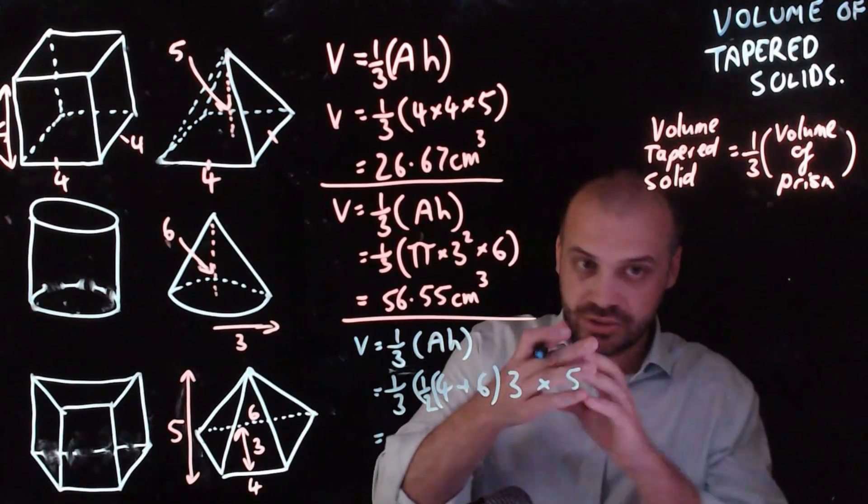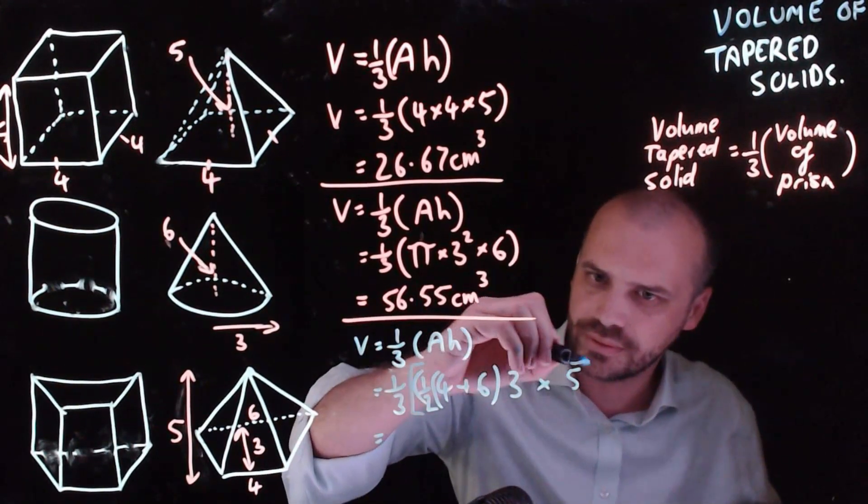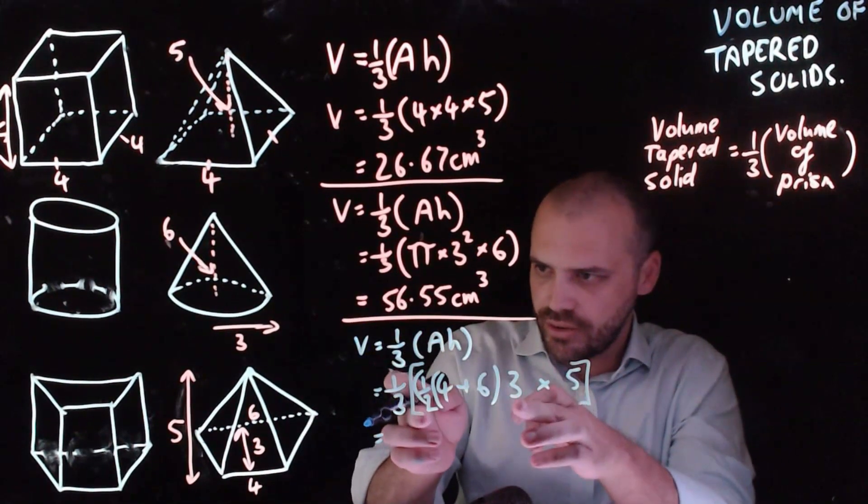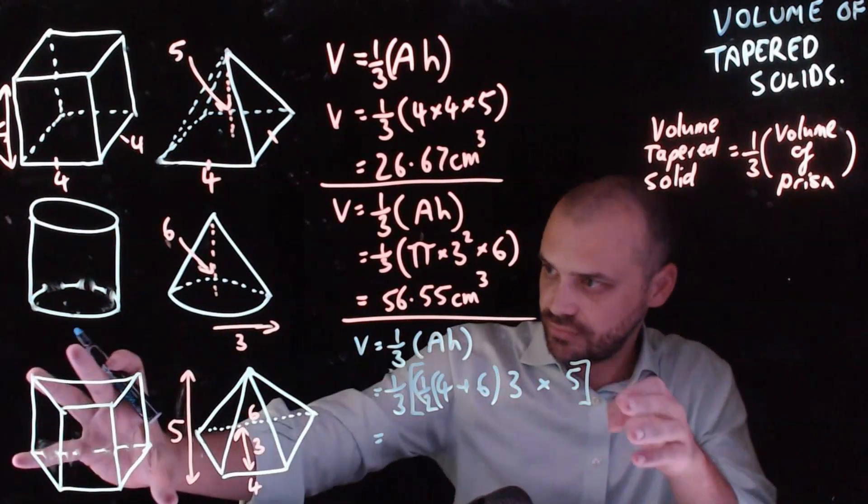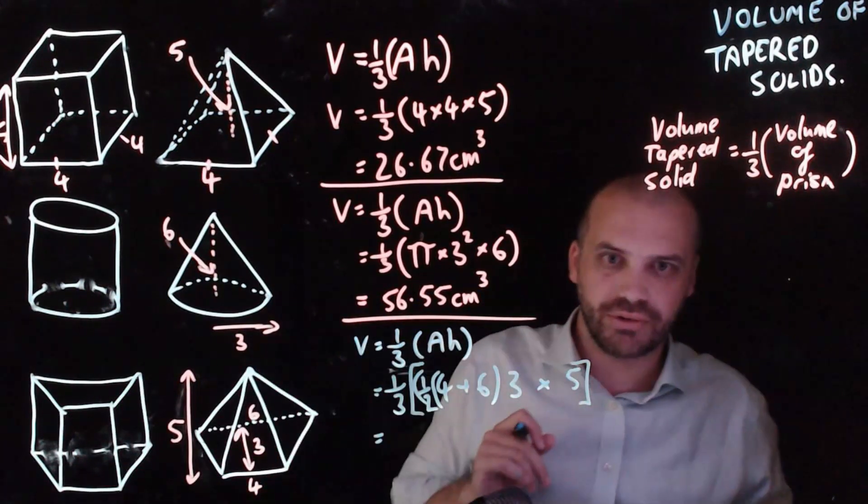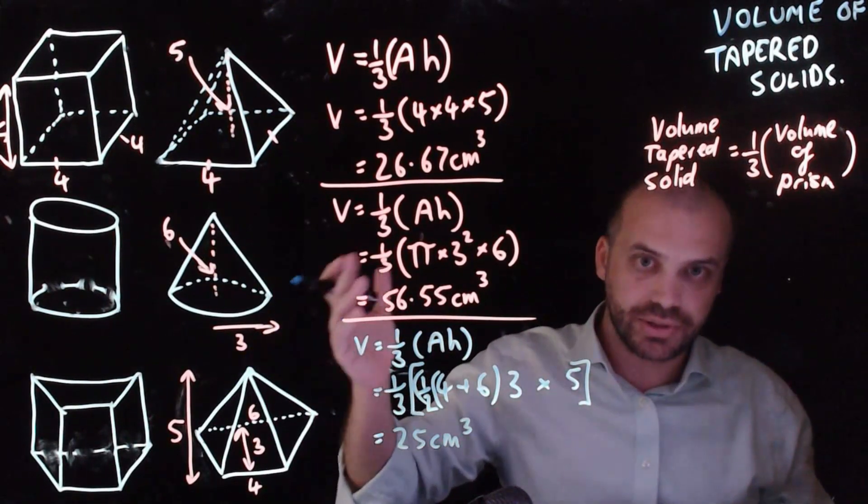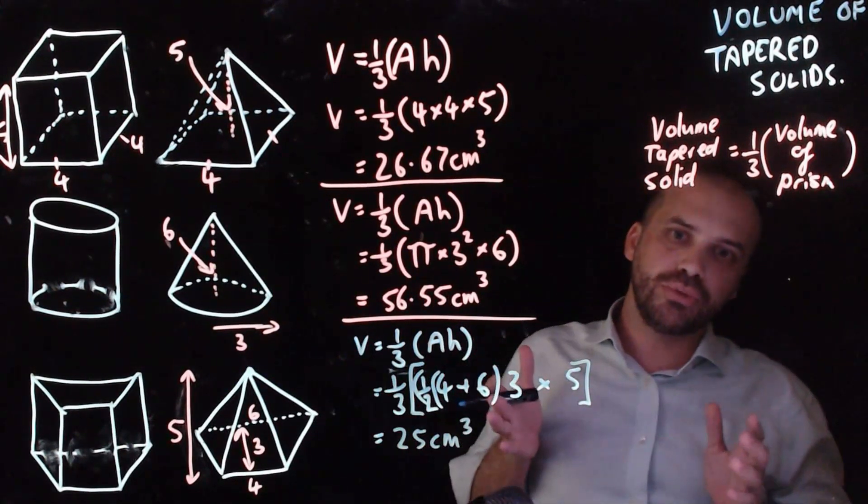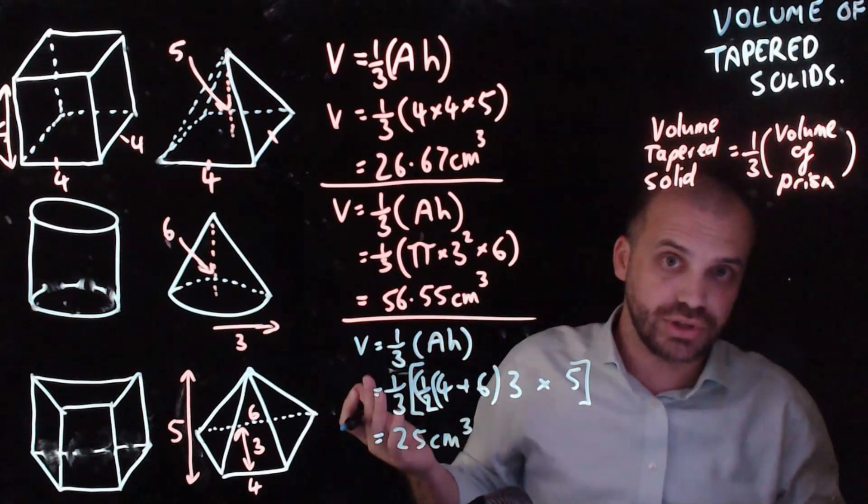And so then just get that into our calculator. Just need to be careful here. It's the area of the trapezium times the height of the shape, and that'll give us the volume of this, and then multiply one-third, and that'll give us that one right there. And there we have it. That is the volume of that tapered solid. So if you can find the volume of any prism, you can find the volume of its matching tapered solid.